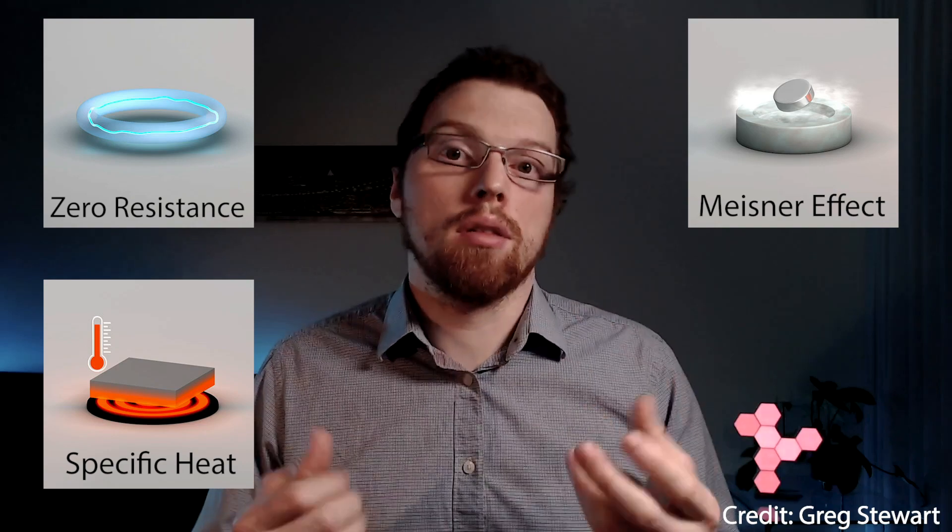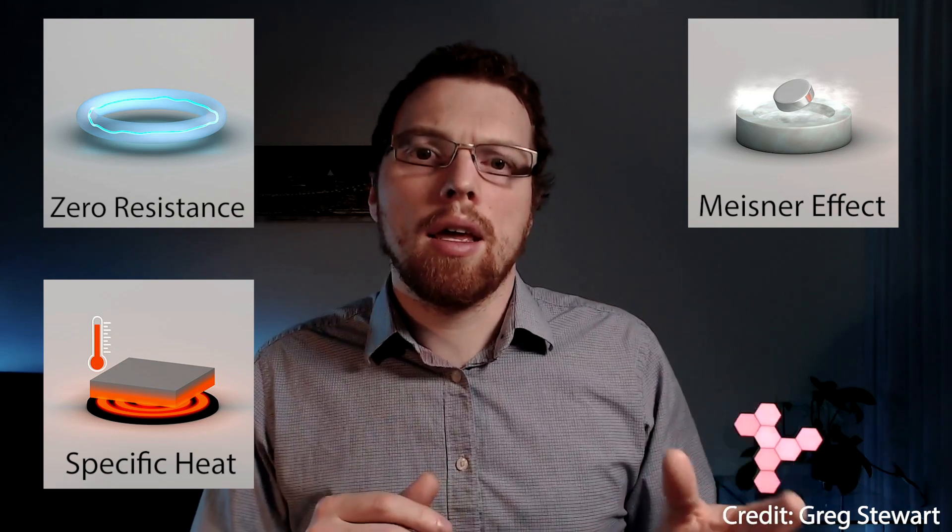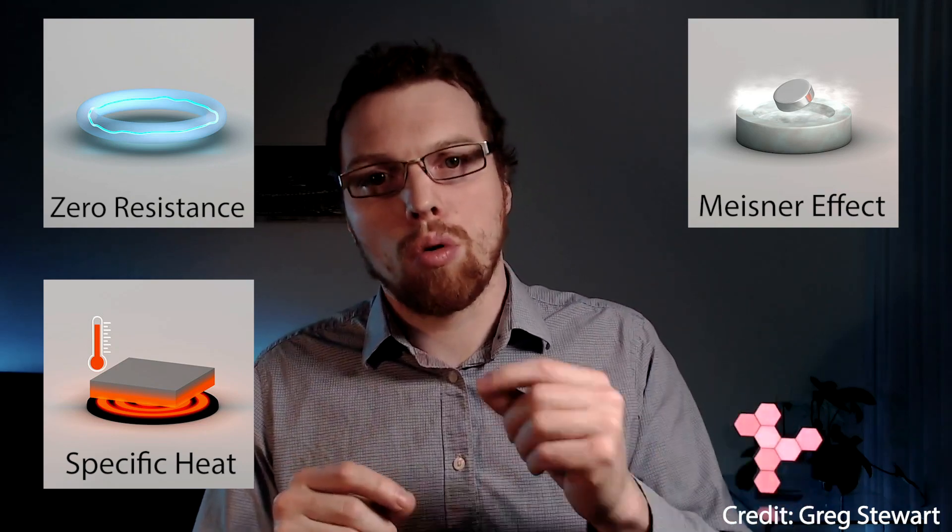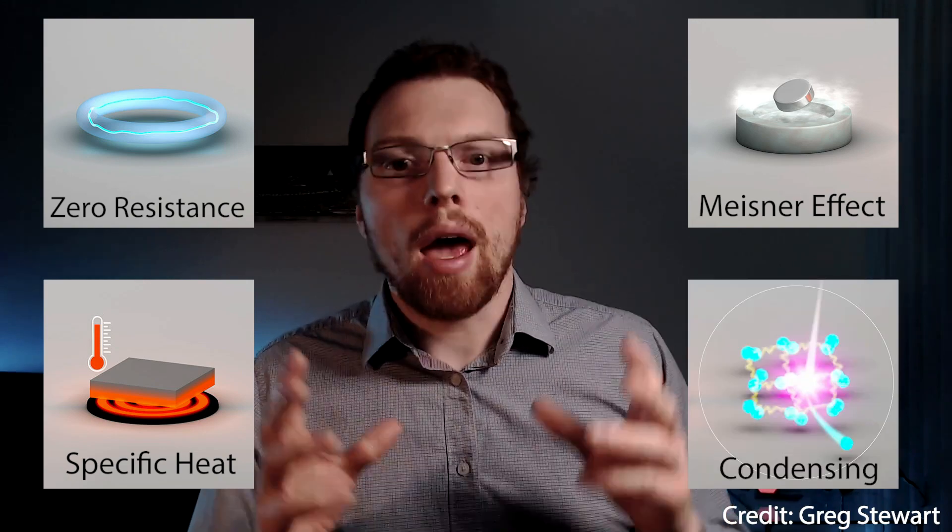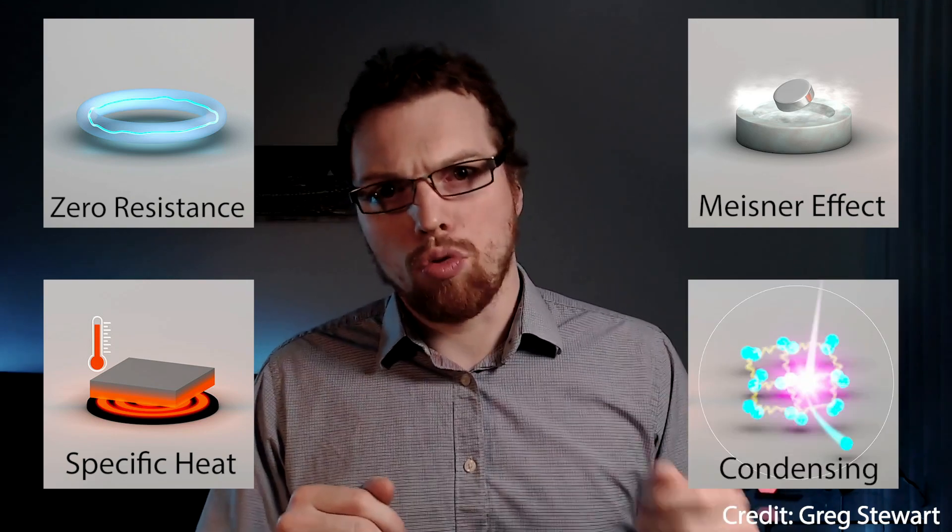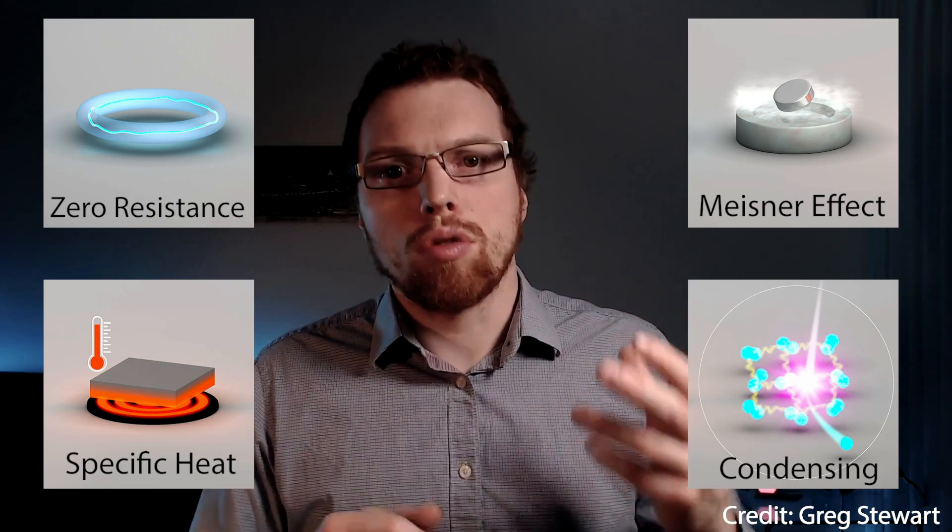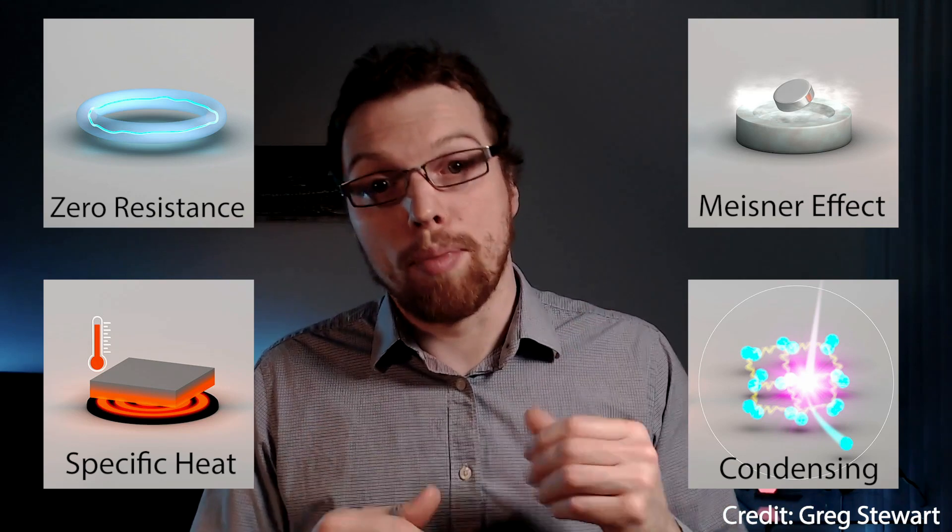At the transition from metal to superconductor, the specific heat increases, where the specific heat is a measure of how much energy is required to heat the material by one degree. And finally, there's the opening of the spectral gap, meaning that the electrons band together to form Cooper pairs.